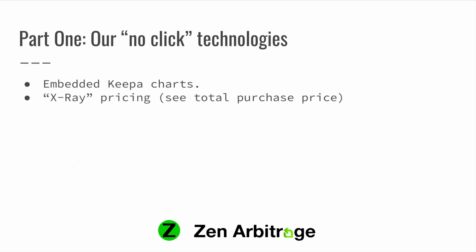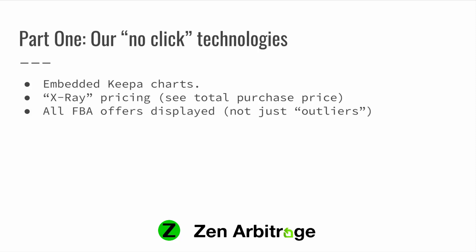I refer to this as one of our no-click technologies. We have the embedded KIPA charts. We also have our X-ray pricing feature, which takes the shipping price and adds it to the price you see in Zen Arbitrage, so you know the full price you're going to pay — not just the base price. All other tools force you to click outside to Amazon to see the actual full price and shipping cost. We display everything right inside Zen Arbitrage. We also display all FBA offers — not just what some tools call outliers — we show you 100% of FBA offers for 100% of the over 20 million books in our database. We don't hold anything back.